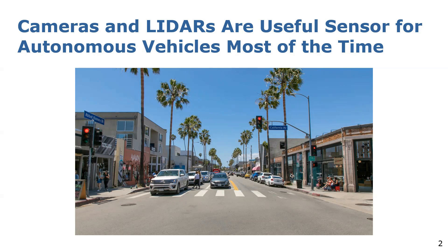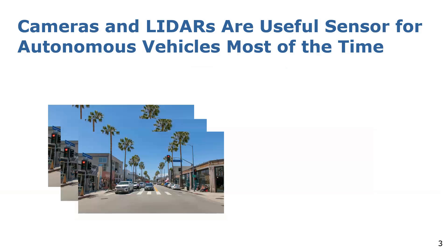Cameras and LIDARs have made tremendous progress in scene understanding in recent years and are useful sensors most of the time. However, to detect moving objects, often multiple images or sequences of LIDAR scans need to be processed to identify moving instances. This leads to latencies, which is disadvantageous for tasks requiring immediate feedback such as collision avoidance.